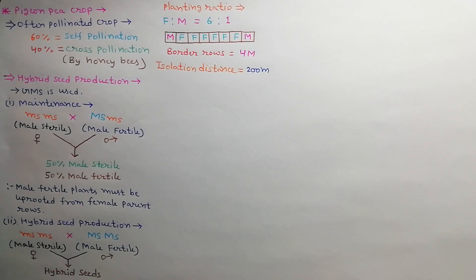The hybrid seed plot is surrounded by 4 male rows to provide sufficient pollen load. Appropriate isolation distance of 200m between 2 seed blocks should be maintained to avoid contamination.